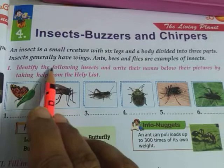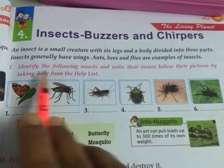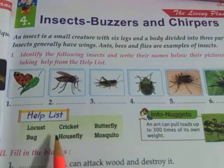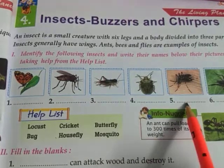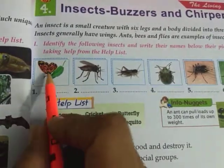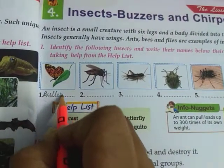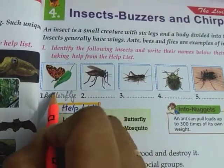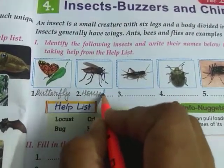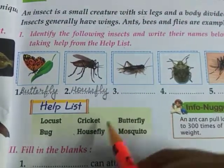Question 1: Identify the following insects and write their names below their pictures by taking help from the help list. In the pictures we can see the insects and write the names below them. First one is butterfly. Second one is housefly. And third one is cricket.